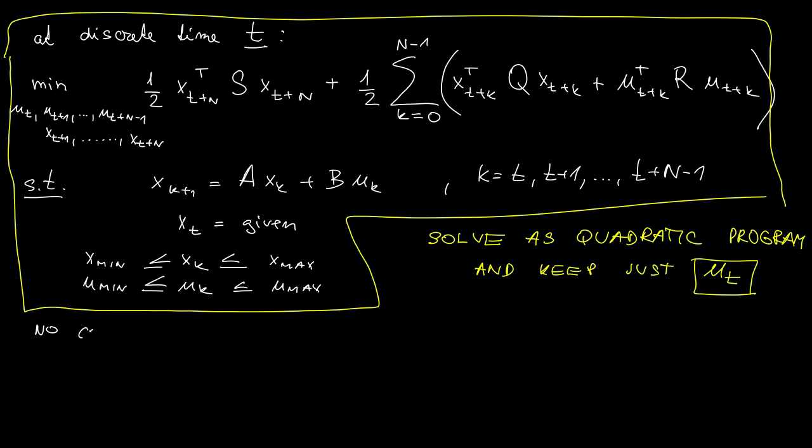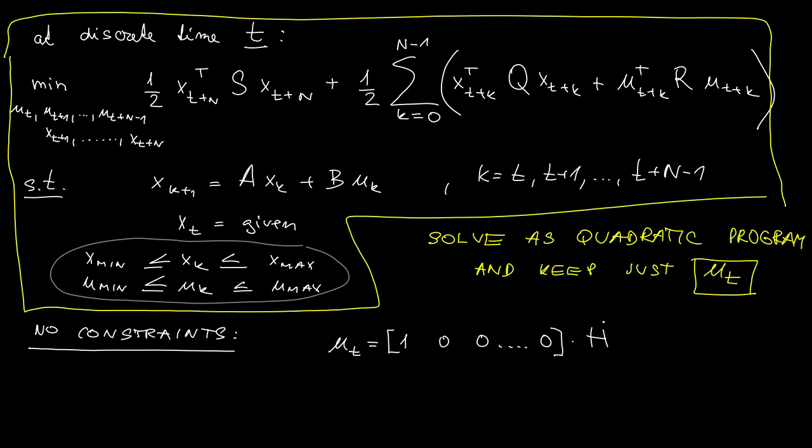Now in order to get some insight, let's discard the constraints of the inequality type temporarily, and for that situation we already know the analytical solution. We combine the results from the previous section with the fact that we only keep the first sample, and then these three terms over here.